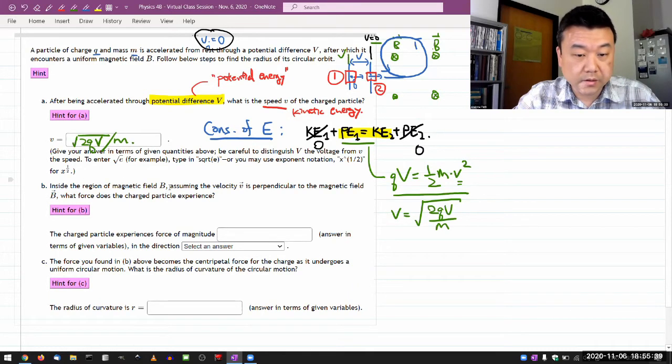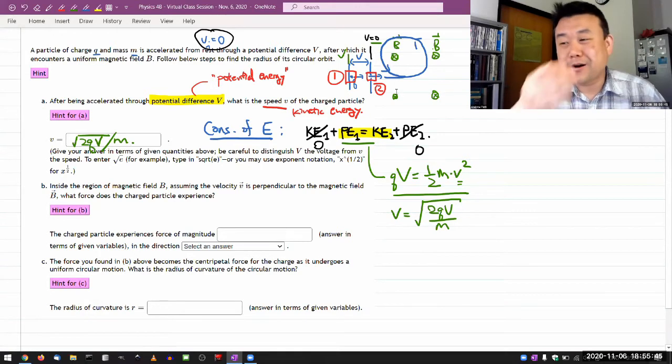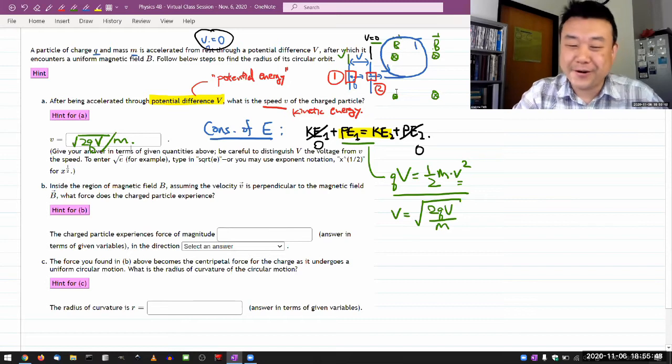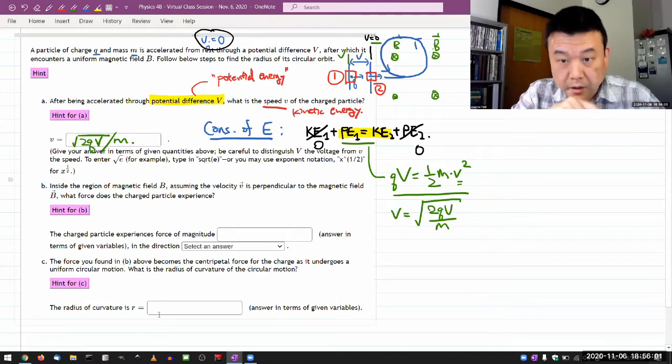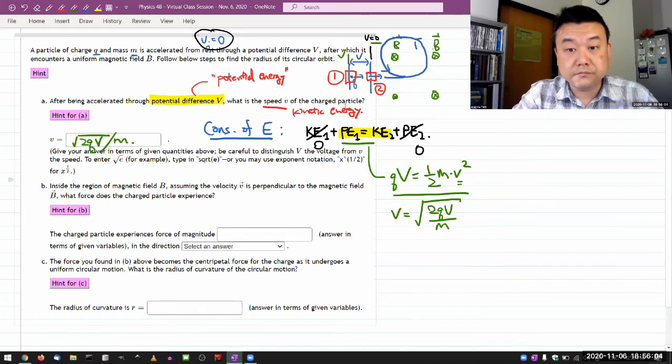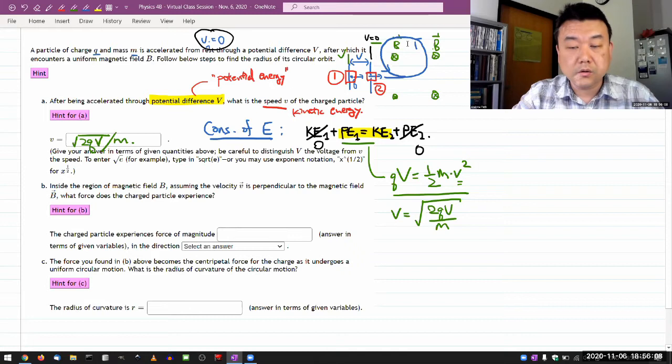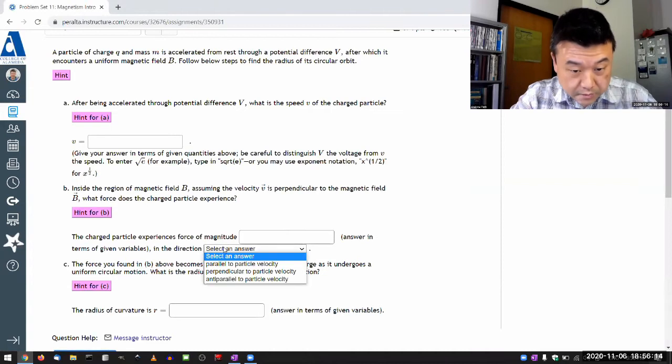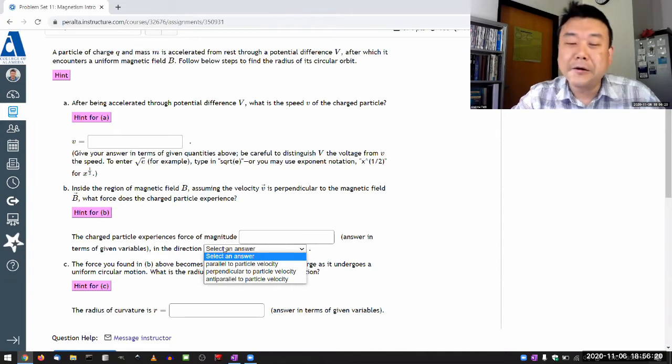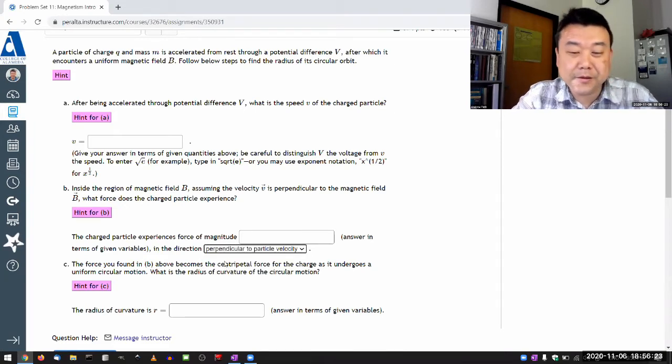Okay, inside the region of magnetic field B, assuming v is perpendicular. I kind of assumed it was perpendicular because that's the common setup. It's good to see that verified, it is perpendicular to the magnetic field B. What force does the charged particle experience? Oh, I think I worked it out. I worked out the direction. So let me just double check the choices I'm given. I figured it out from the cross product, from the right hand rule, that it should be upward. And let me just double check to make sure that that's one of the options. Oh, it's not one of those options.